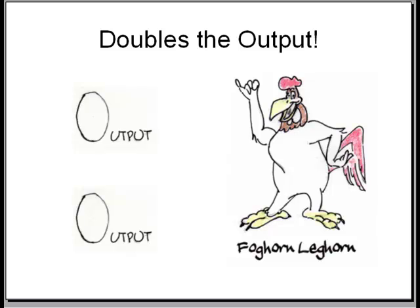Doubling the inputs and getting less than double the output shows decreasing returns to scale.